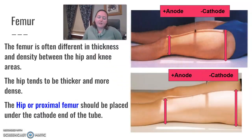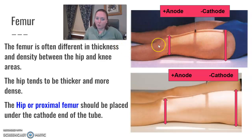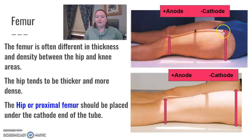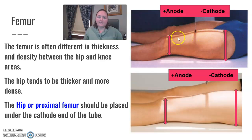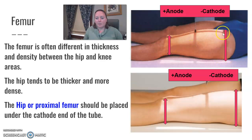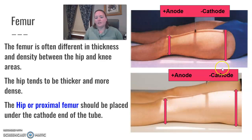The femur is another example. The femur is different between the hip and knee portions. Up at the hip, it tends to always be thicker and more dense — we have the femoral head, the acetabulum, and a little bit of pelvis — versus the distal portion closer to the knee, which tends to be less dense. The proximal/hip portion tends to have more soft tissue or more fat involved than down by the knee. So you would put the hip or the proximal end under the cathode.